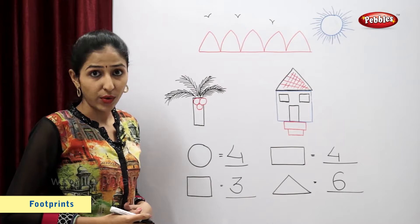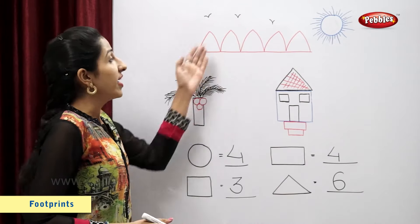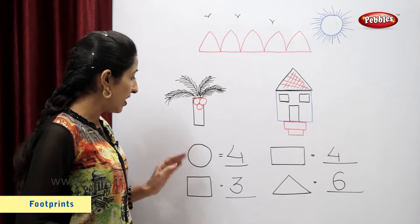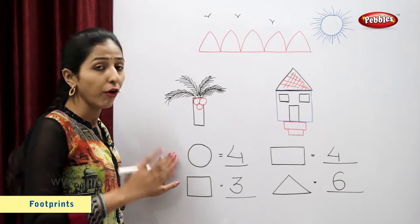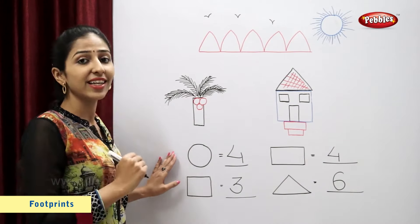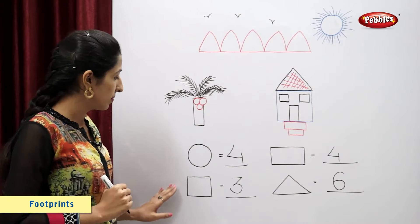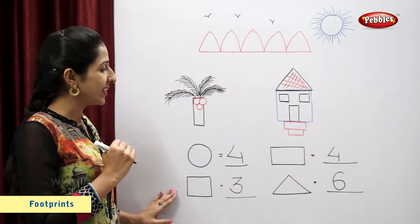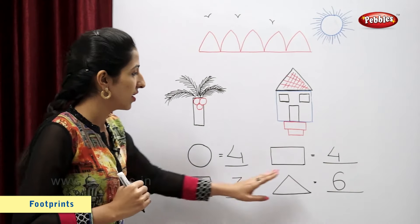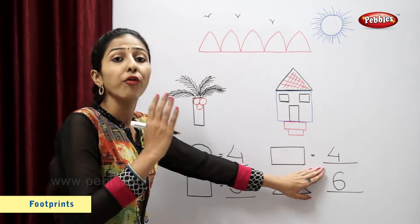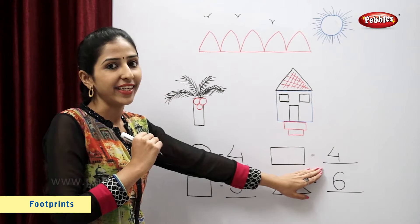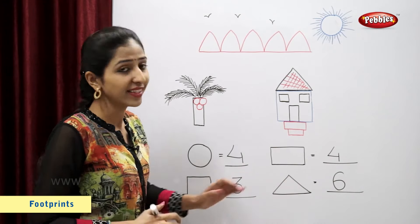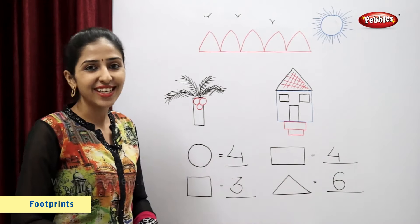So in this scenery, there are four circles, three squares, four rectangles and six triangles.